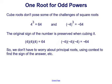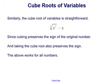So we don't have to worry about principal roots or using context to find the sign of the answer — it will come through when you take the cube root, and you'll see it in the original problem right away. Similarly, the cube root of a variable is more straightforward. For example, the cube root of x cubed equals x. Since cubing preserves the sign of the original number, we don't care if the original number is negative, because the cube root of a negative number can equal a negative number.